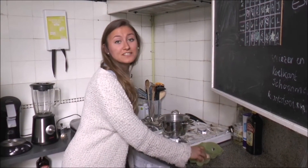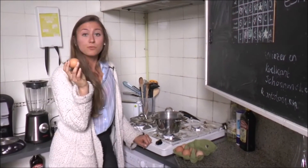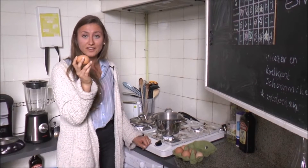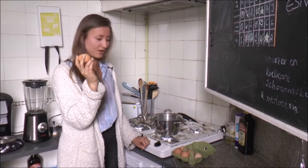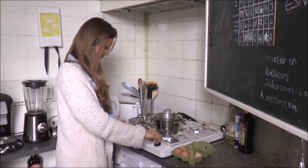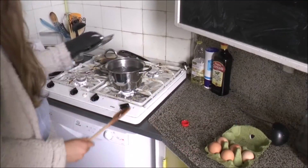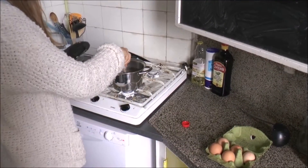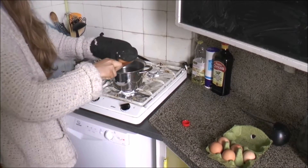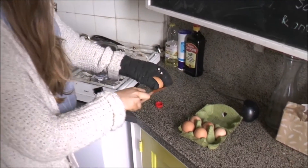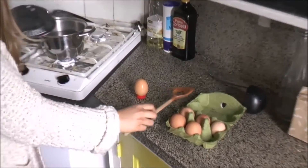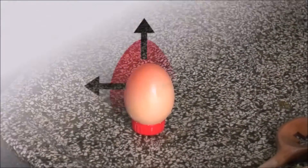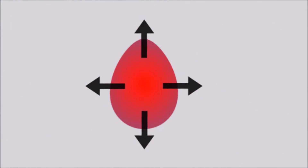A perfect example is the egg. We will first boil the egg and then look at the temperature profile and the way it cools down. At first, the egg is the same temperature as the boiling water, so about a hundred degrees Celsius.